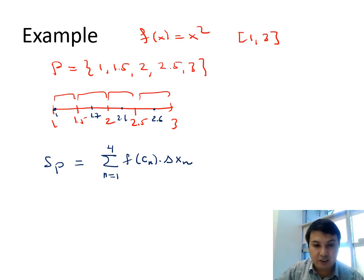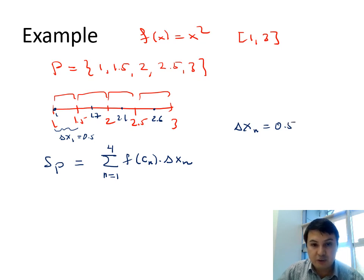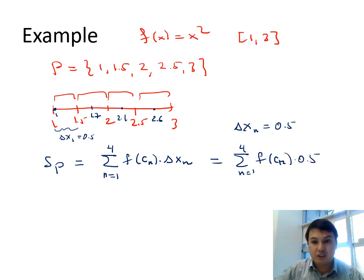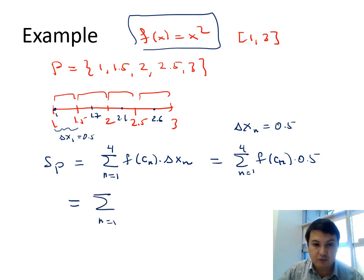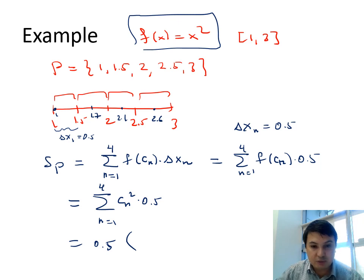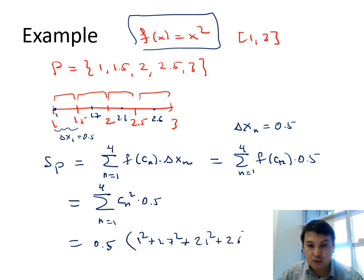Since each Δx = 0.5, the Riemann sum equals the sum from i=1 to 4 of c_i² times 0.5. Factoring out 0.5, we get 0.5 times (1² + 1.7² + 2.1² + 2.6²). That is the Riemann sum for this particular partition with the given sample points c_i.